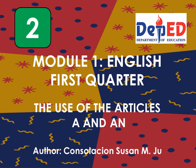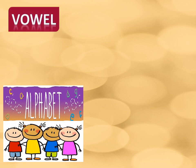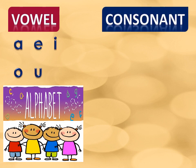Before we start, let us have a review first on the vowel and the consonant letters. The vowel letters are A, E, I, O, U.